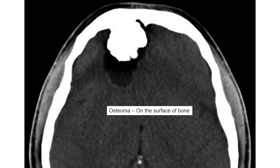A very key point: by definition, an osteoma occurs on the surface of the bone. It almost has this stuck-on appearance, as if someone has taken a round object and just placed it on the surface of the inner table. You can also have osteomas on the outer table and osteomas growing into the sinuses.